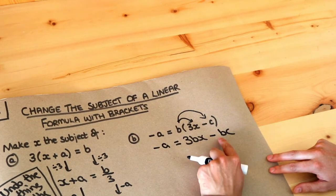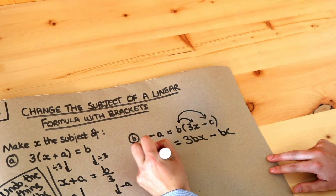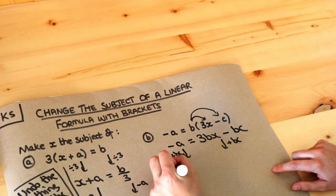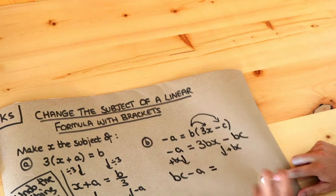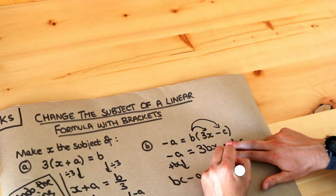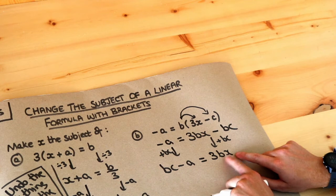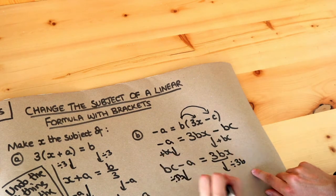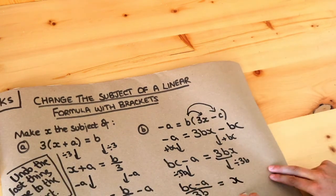Well, x was times by 3b, then we subtracted bc to get minus a. The last thing done was minus bc, so we add bc to both sides. So on the right it's minus a plus bc, or we can write bc minus a. And the minus bc plus bc cancel, leaving just 3bx. Now the last thing done to x was that it was multiplied by 3b, so we divide both sides by 3b. This whole thing — bc minus a — gets put over 3b. Dividing by 3b gets rid of the 3b, leaving just x. So x equals bc minus a all over 3b. And that's the final answer, because x is on its own on one side of the equation.